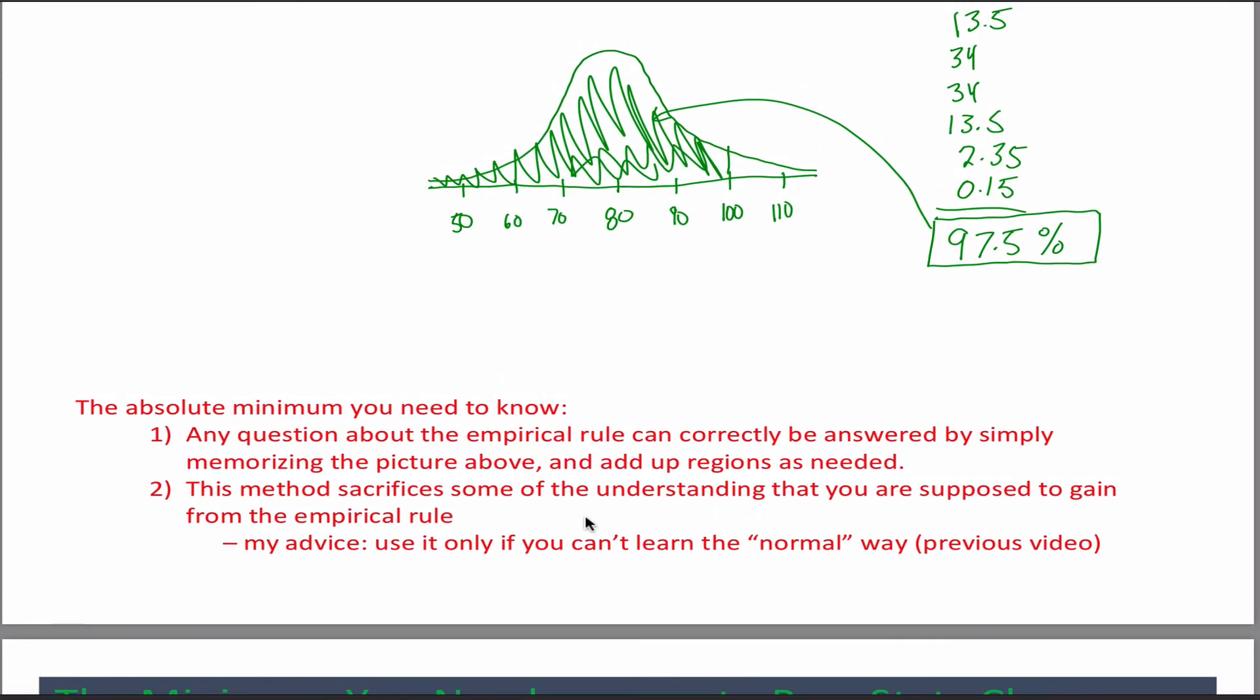What did I write about the absolute minimum you need to know? Any question about the empirical rule can be done using either of these two methods. You can do it kind of the longer way I explained in the other video. Probably ideal if you could do that. But if you can't, it's okay. Don't feel bad. Don't take a 0 on this. Memorize that picture. Make some flashcards. And then add up the regions as needed. This method may sacrifice some of the understanding, blah, blah, blah. My advice is only use it if you can't learn the normal way. I guess that's true. That's all I got.